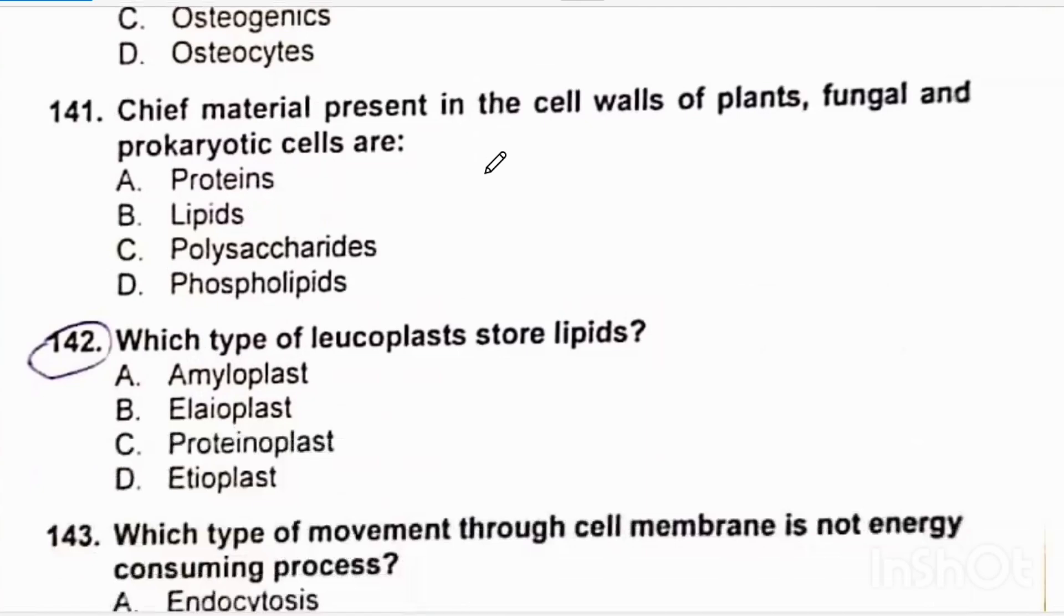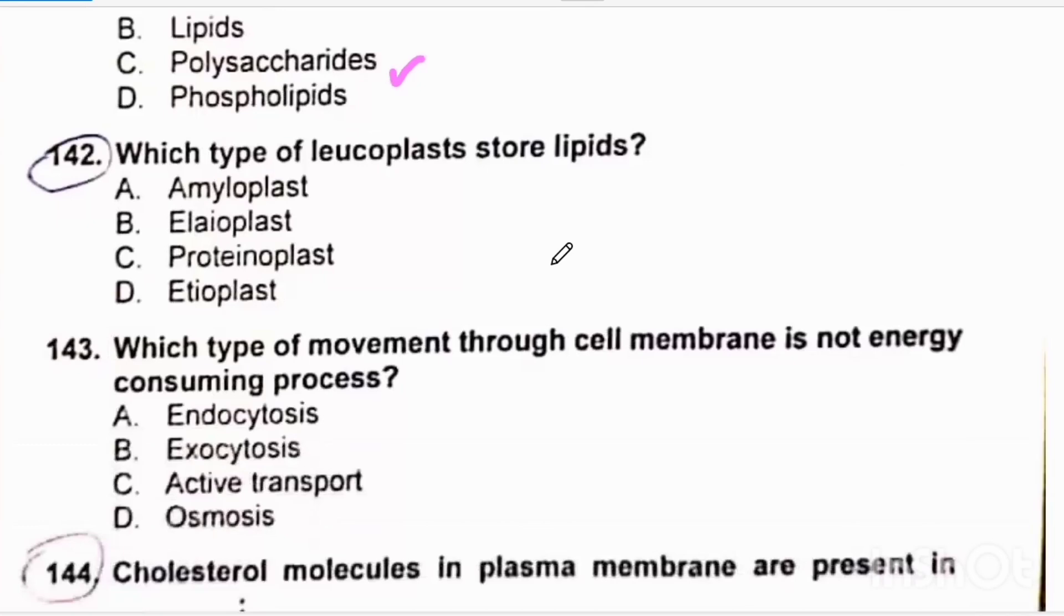Chief material present in the cell wall of plants, fungal, and prokaryotic cells are obviously polysaccharides. In plants, that is polysaccharides. Which type of leucoplast stores lipids? Leucoplasts are basically of three types: amyloplasts, elaioplasts, and proteinoplasts. Amyloplasts store starch, elaioplasts store lipids, and proteinoplasts store proteins. So correct option will be beta.